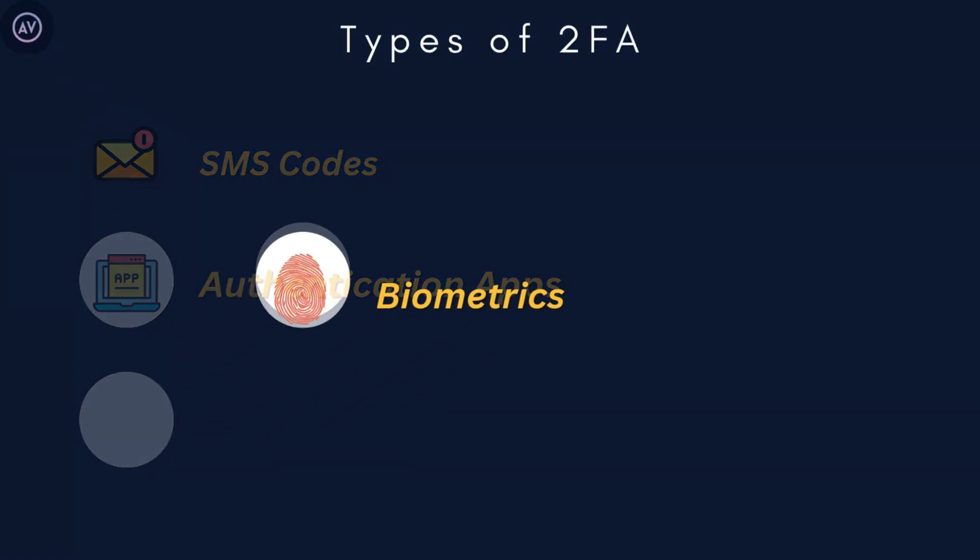Number three: biometrics. Some services let you use biometrics — things like your fingerprint, face scan, or even a retina scan — as your second factor. This is usually the fastest and most secure option. While SMS codes are convenient, I recommend using an authentication app or biometrics if possible, as they offer stronger security and are much harder to hack.